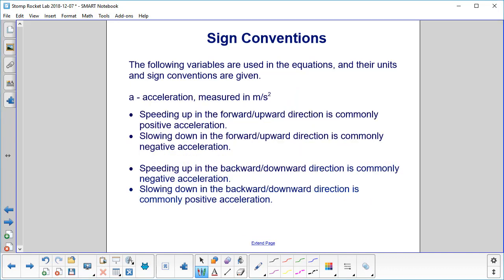Finally, we have acceleration, which is measured in meters per second squared. So if you speed up in the forward or upward direction, or to the right, we commonly call that positive acceleration. If you're slowing down, that would be negative acceleration.